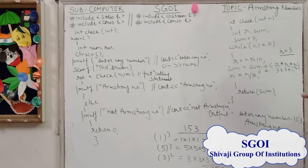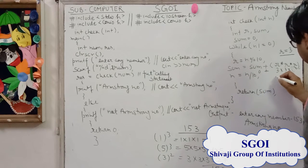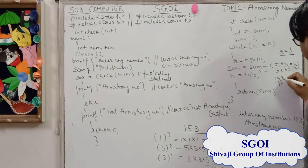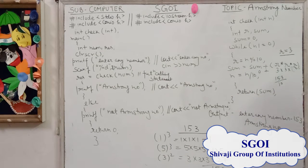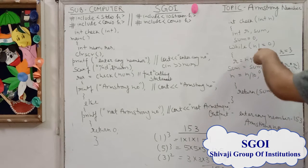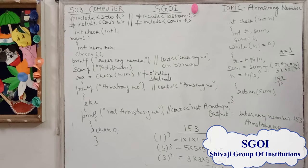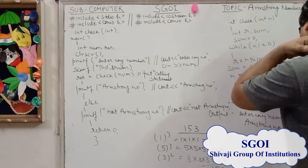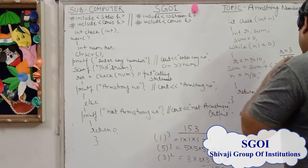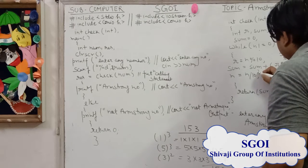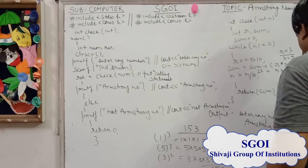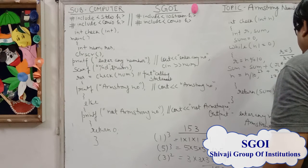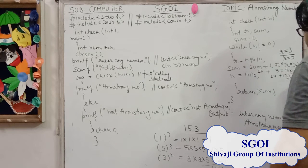Then we check 15 is not equal to 0. r equals n mod 10, we find the mod of 15, that is 5. So the next time r equals 5. Already 27 is stored in sum, then 27 plus 5*5*5, that is 27 plus 125, which equals 152. Then we divide n by 10, which gives 1.